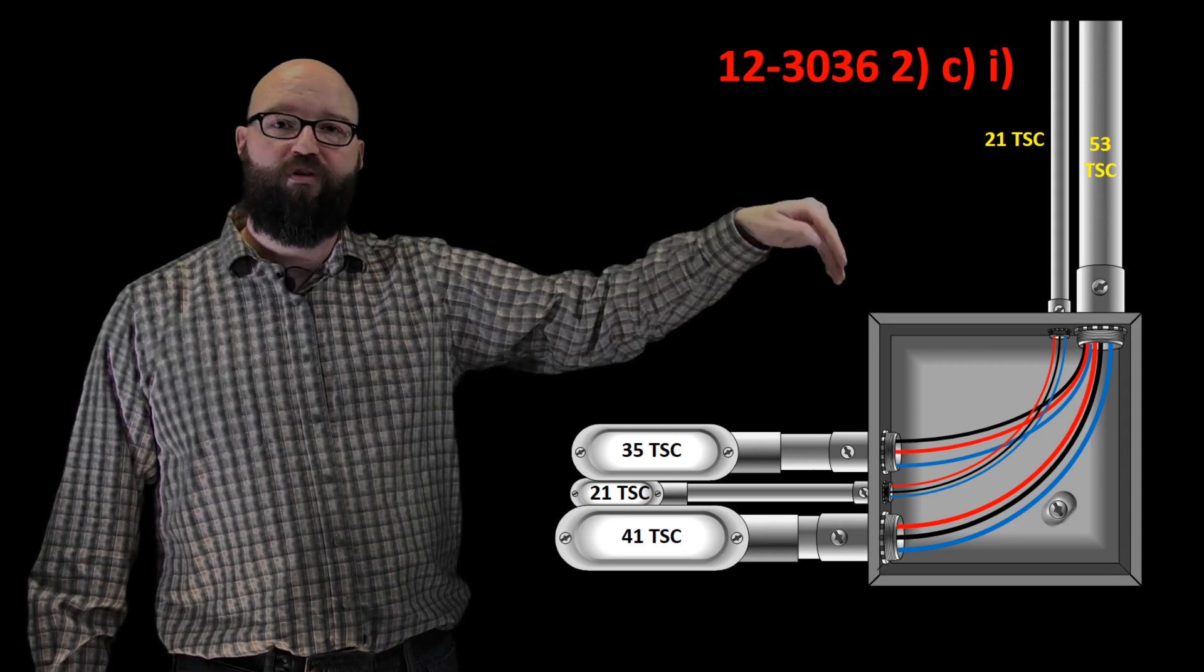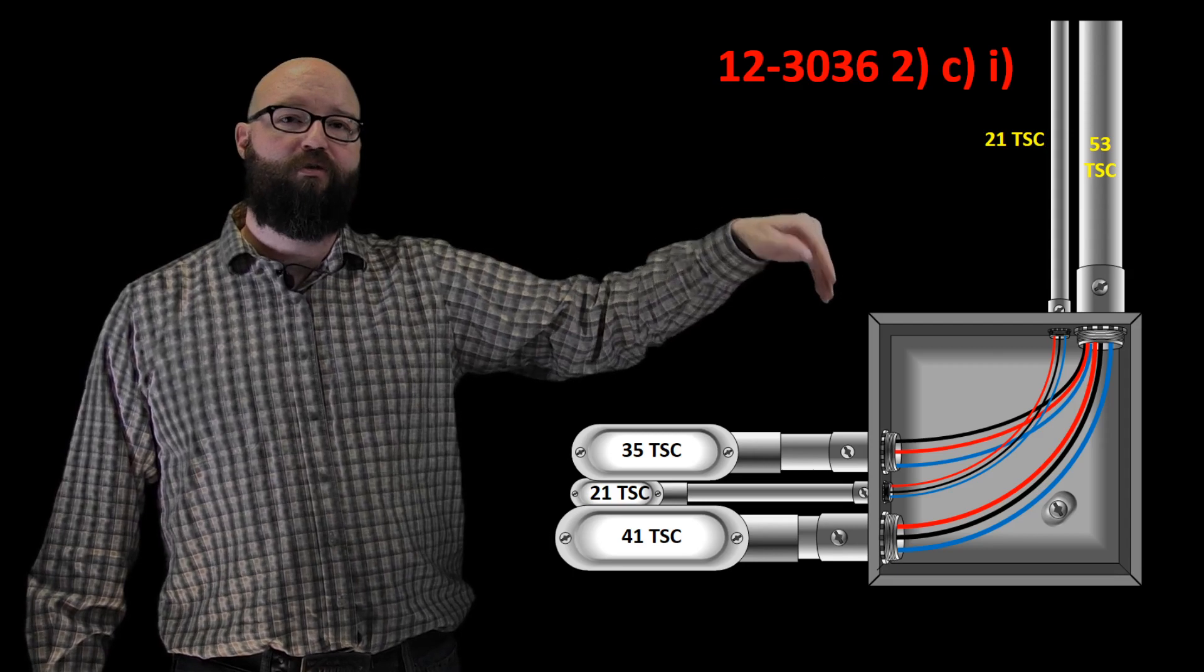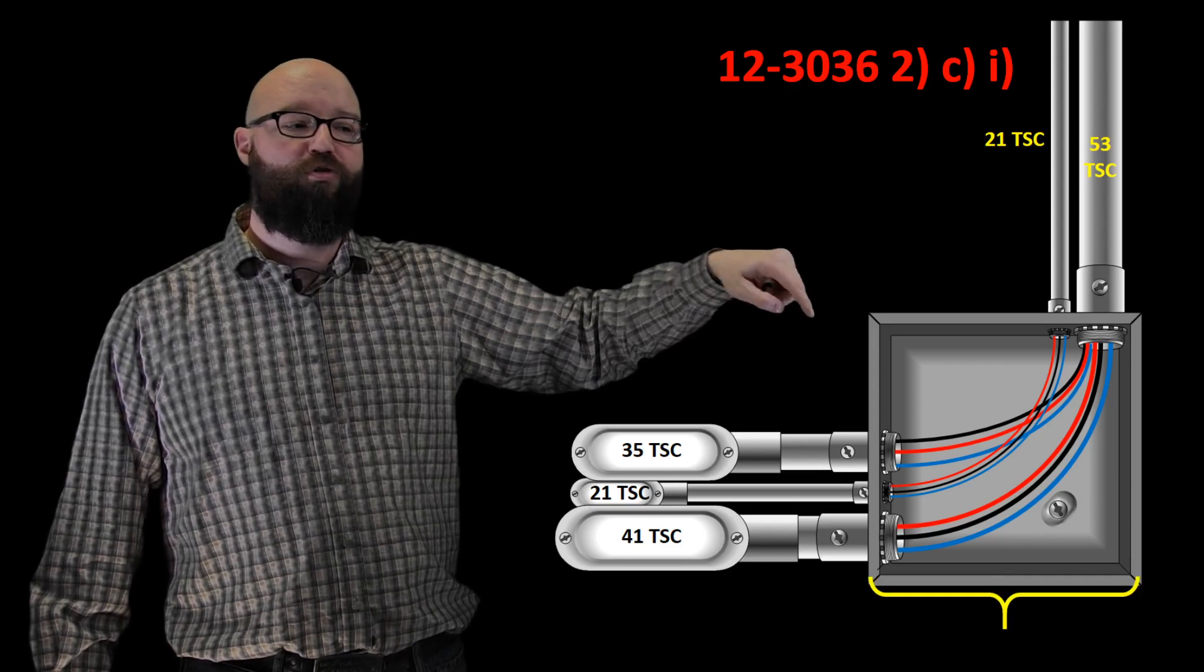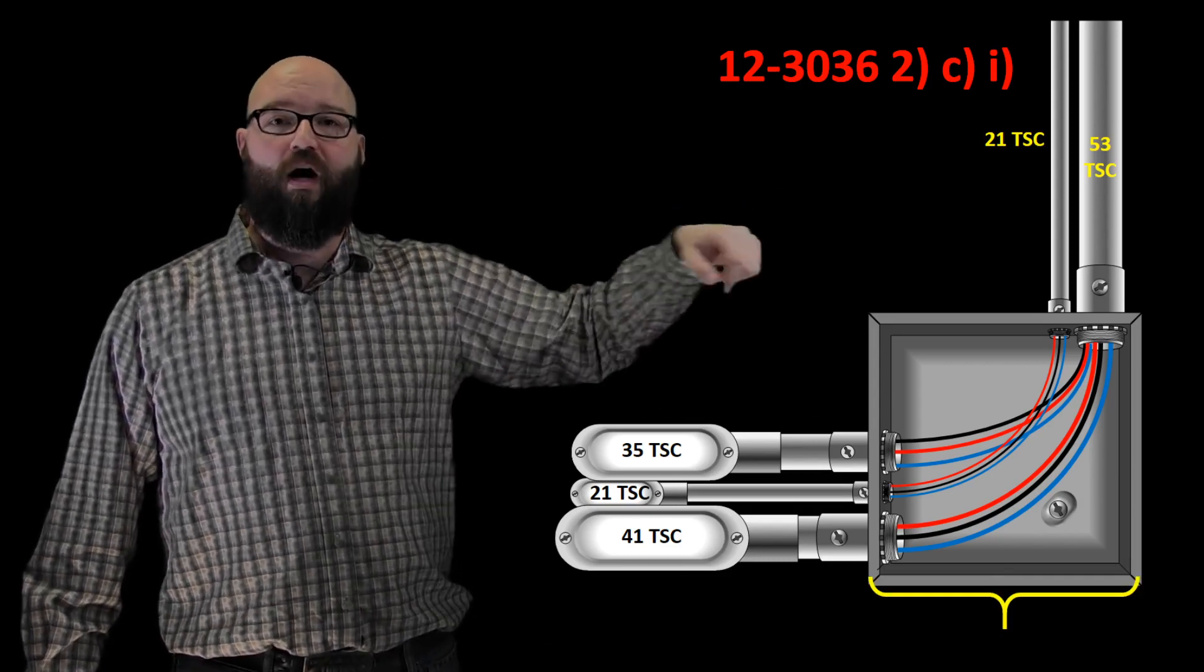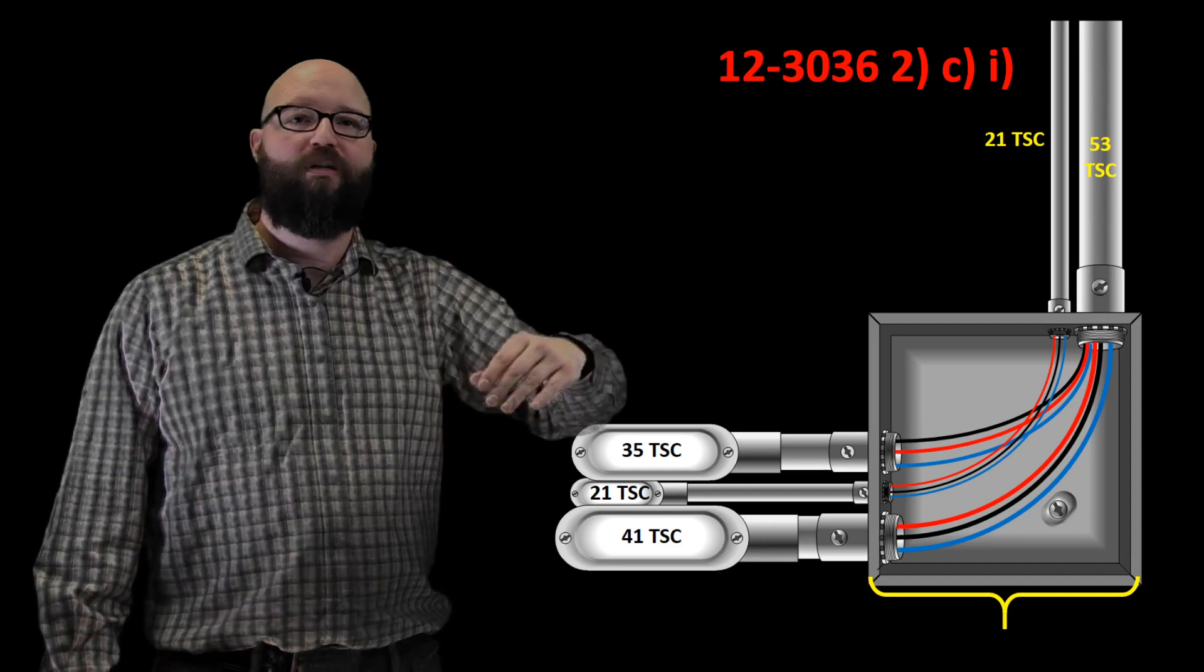The raceways that enter this wall, we want to make sure that we observe the proper bend radius for the conductors that exit those conduits. In order to do that we need to figure out what is the minimum dimension to the opposite wall for where those raceways enter. So to do that if we read in 12-3036, what it tells me we're gonna do is take six times the largest trade size diameter.